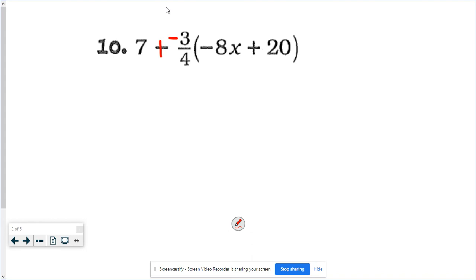Remember we are not combining these two first because the distribution, that negative three-fourths is getting multiplied by some stuff, and order of operation says I have to do that multiplication, that distribution first. So I haven't done anything with my seven yet. I'm going to write it down. Plus negative three-fourths times negative eight x.